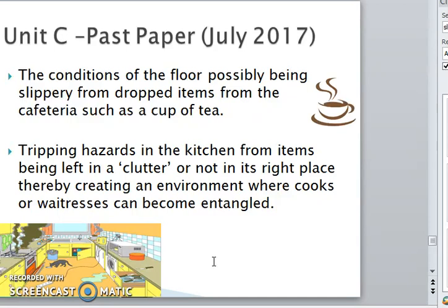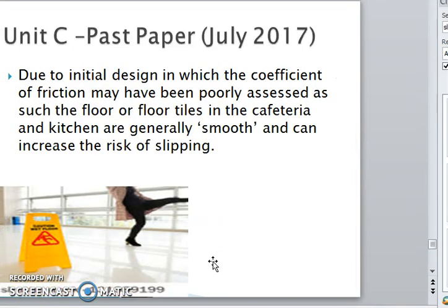Some possible answers for the causes of the high level of slips and trips: First, the condition of the floor — possibly slippery from dropped items in the cafeteria, such as a cup of tea. Next, tripping hazards in the kitchen from items being left in clutter or not in their right place, creating an environment where cooks or waitresses can become entangled. Also, due to the initial design, the coefficient of friction may have been poorly assessed, meaning the floor tiles in the cafeteria and kitchen are generally smooth and increase the risk of slipping.